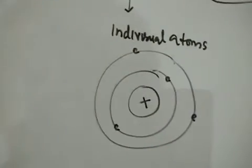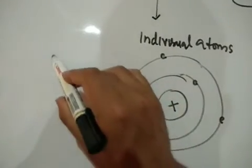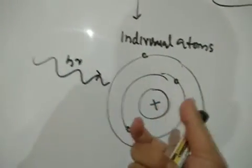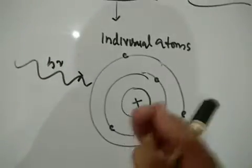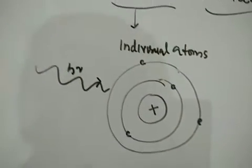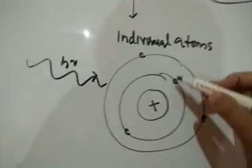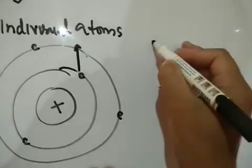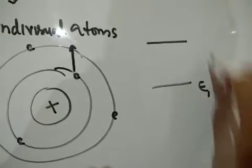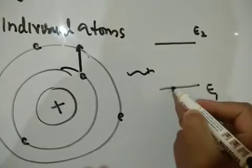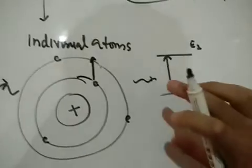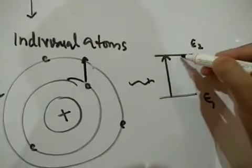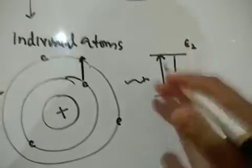In atomic spectroscopy, the electromagnetic radiation interacts with the individual atoms. That means our sample should contain individual atoms, not molecules — this is very important. The interaction of electromagnetic radiation with the atom causes the electrons in the energy levels to undergo transitions. It leads to the transition of electrons from one energy level to a higher one. If it is excitation, we obtain an absorption spectrum; if the electron comes from a higher energy to a lower energy level, we get an emission spectrum.